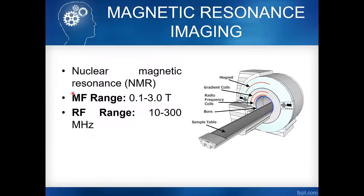The usual range of MRI is measured in Tesla — the external magnetic field is measured in Tesla. The radio frequency is measured in megahertz. The usual range is 0.1 to 3.0 Tesla, but the most commonly used magnetic field is 1.5 Tesla. When you see an MRI machine, it is 1.5 Tesla automatic superconductive — not permanent and not resistive.